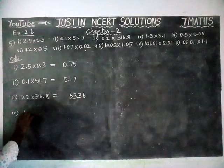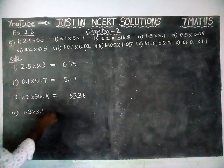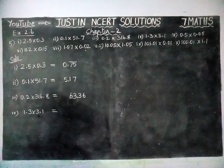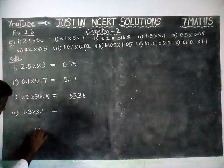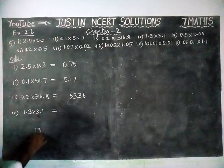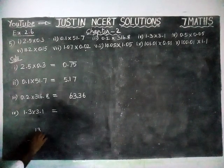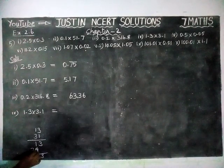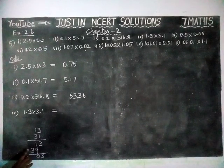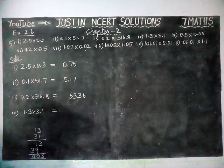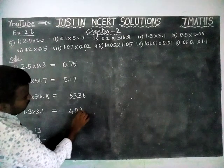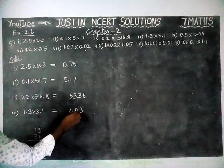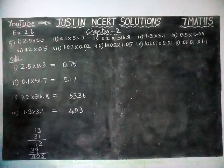Fourth question: 1.3 into 3.1 is equal to. We have to multiply 13 into 31. 1 three is 3, 1 one is 1. 3 threes are 9, 3 ones are 3. So the answer: 3, 9 plus 1 is equal to 10, remaining 1, so 3 plus 1 is equal to 4. We are getting answer 403. Here we have 2 decimal points, so from the right hand side, 2 decimal points: 1, 2 — the answer is 4.03.